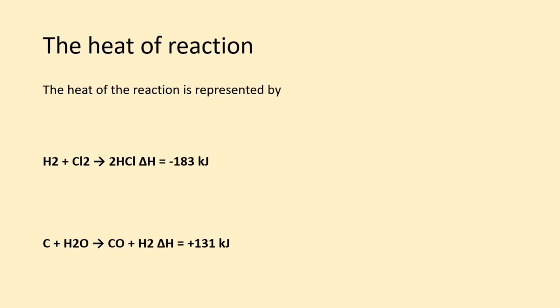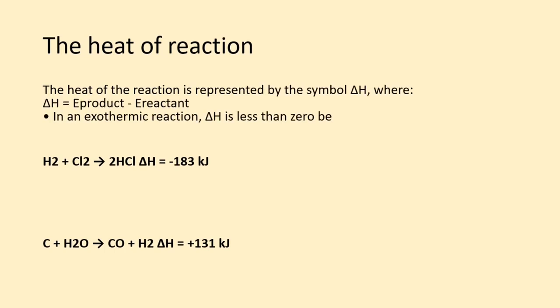The heat of the reaction is represented by the symbol delta H, where delta H equals energy of the product minus energy of the reactant. In an exothermic reaction, delta H is less than zero because the energy of the reactants is greater than the energy of the product. For example, H2 + Cl2 → 2HCl, ΔH = -183 kJ.